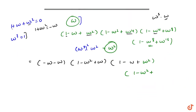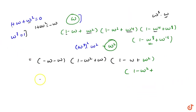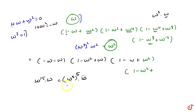For omega to the power 16, we write this as omega to the power 15 times omega, which is omega cubed to the power 5, times omega. Since omega cubed equals 1, this reduces to 1 times omega, which is simply omega.